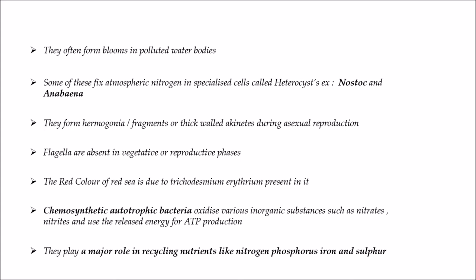Cyanobacteria form hormogonia or fragments during asexual reproduction, and flagella are absent in vegetative or reproductive phases. The red color of the Red Sea is due to Trichodesmium erythraeum present in it. Chemosynthetic autotrophic bacteria oxidize various inorganic substances such as nitrates and nitrites, using the released energy for ATP production, and play a major role in recycling nutrients like nitrogen, phosphorus, iron, and sulfur.